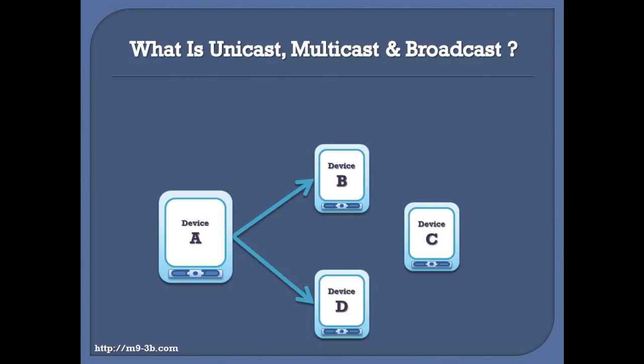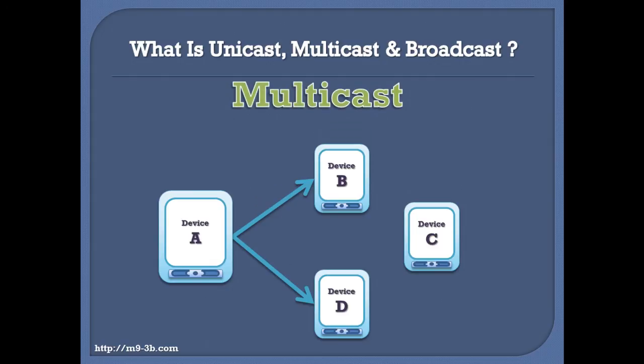Now, if device A is transmitting to device B and D at the same time, then the way of transmission used here is called Multicast. So, Multicast is the process where one device is transmitting to a group of selected devices among all possible devices.